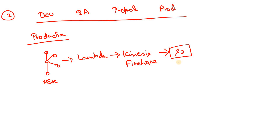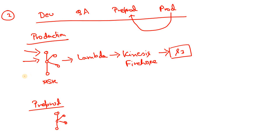This is a perfectly fine architecture, as discussed in a previous video. Now, since pre-prod is a replica of production, we also have an MSK cluster with an MSK topic in pre-prod. Our requirement is that whatever messages are published in the production MSK topic should also be available in the pre-prod MSK cluster, so that pre-prod mirrors production and we can test modified code there without encountering new issues in production.